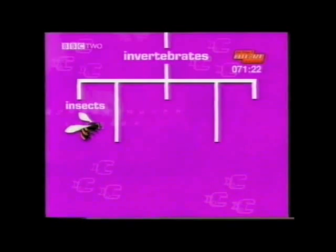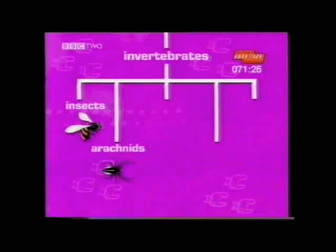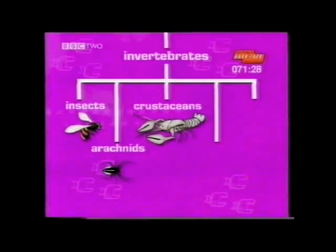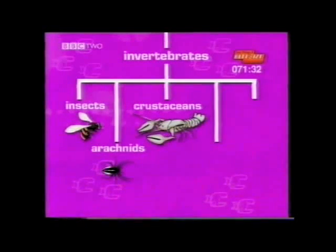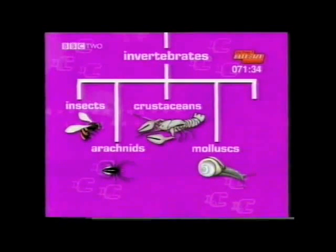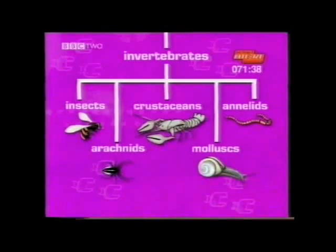The five invertebrate groups are: insects; arachnids — that's spiders and scorpions; crustaceans — for example lobsters and woodlice; molluscs — such as snails and mussels; and finally annelids — worms and leeches.